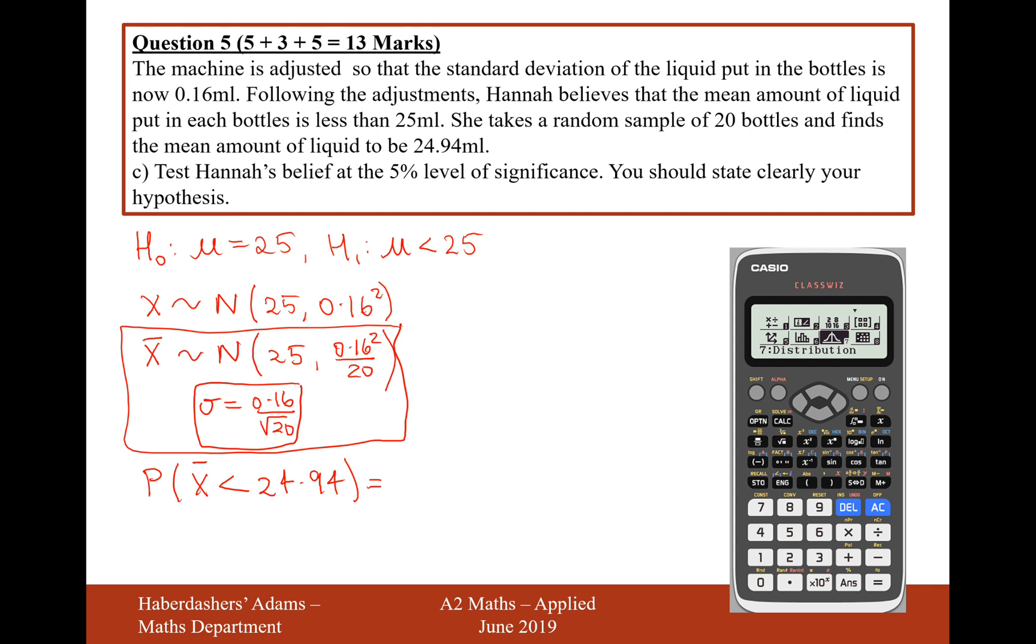So let's go to our normal distribution calculator. That's mode 7 on the calculator. We'll go into normal CD mode. We don't really want a lower bound, but we want an upper bound of 24.94. The standard deviation is 0.16 divided by the square root of 20. That will give you 0.0357. And the mean at the moment is 25. And let's see what the probability would be of getting a value of 24.94 or fewer. And we're going to test this value compared to 5%. The answer there is 0.0467.